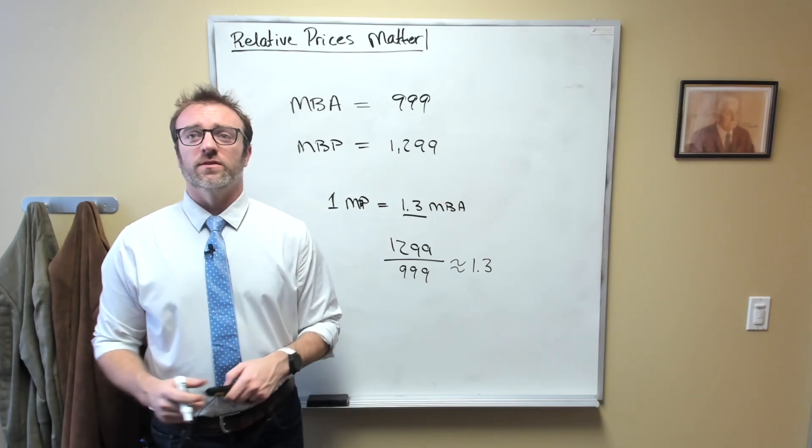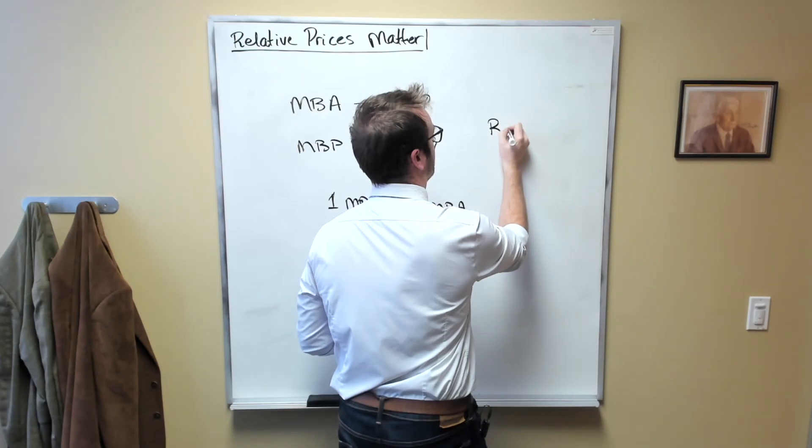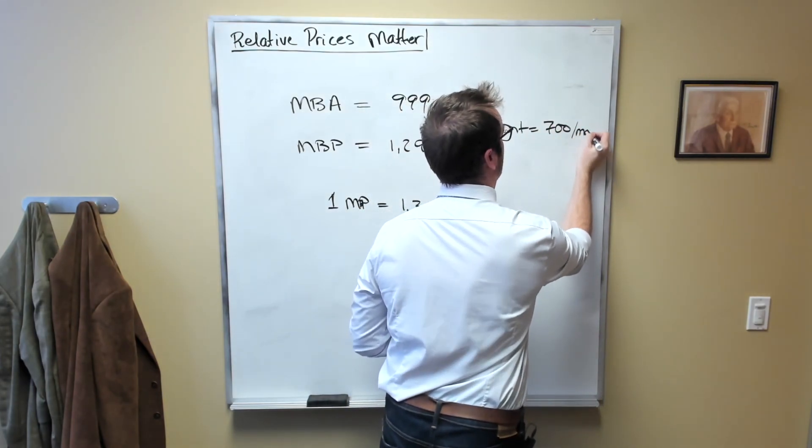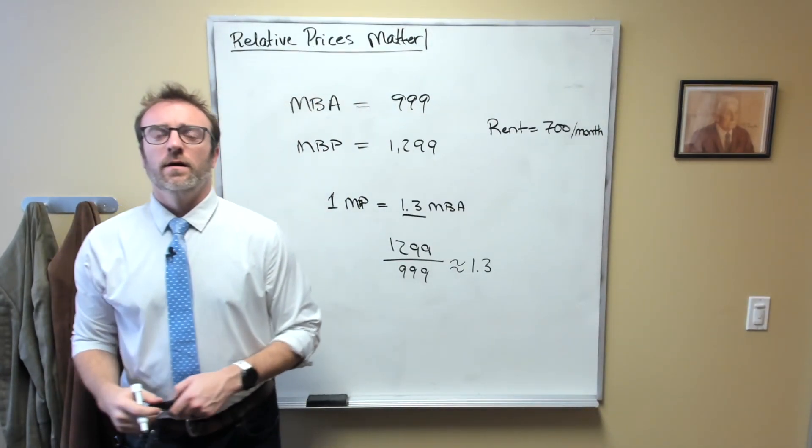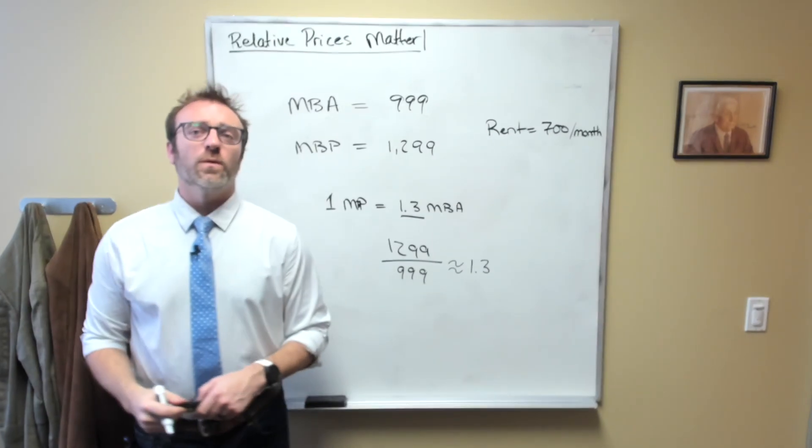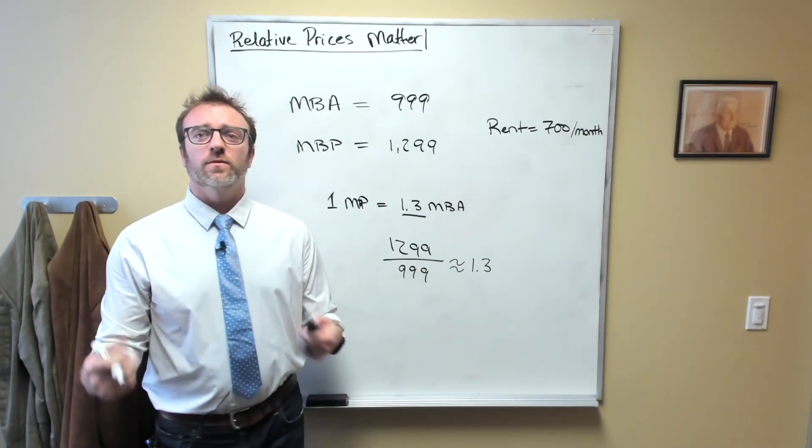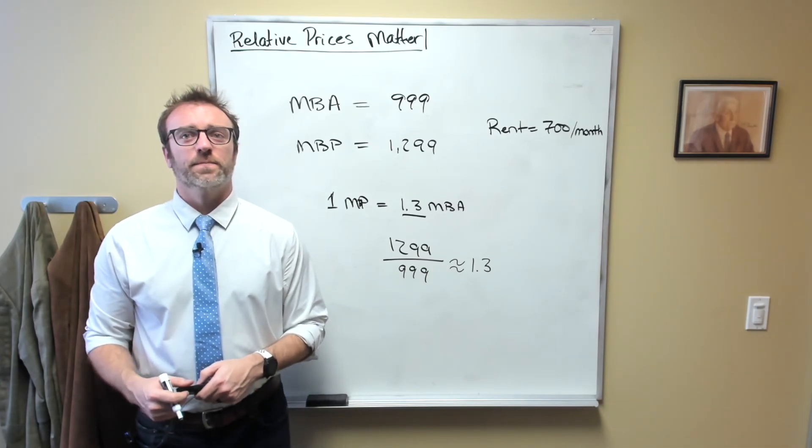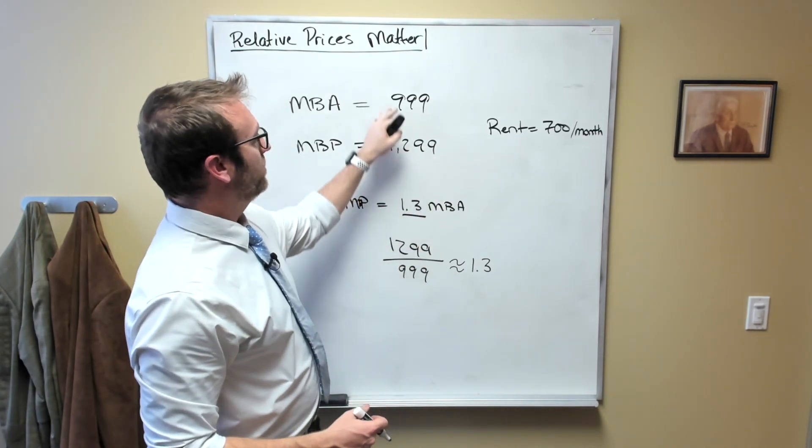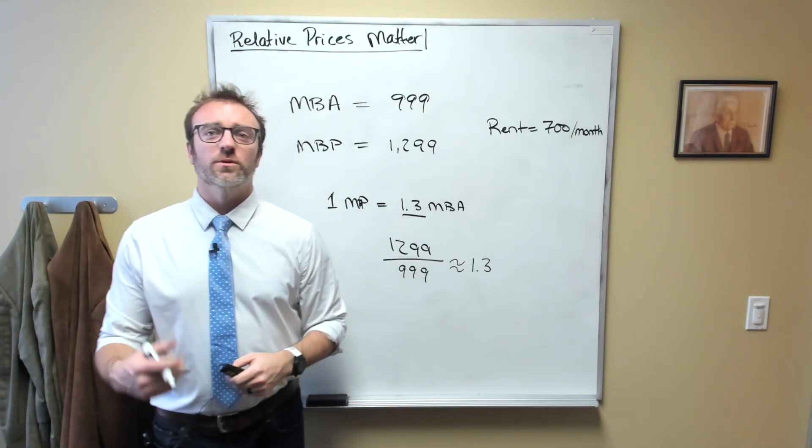Alternatively, you could think of this in terms of your rent. Suppose your rent was $700 per month. The MacBook Air can be had for 1.43 months' rent, and the MacBook Pro for 1.86 months' rent. What you would be doing is comparing the relative price of the computers to your opportunity cost if your opportunity cost was paying rent.